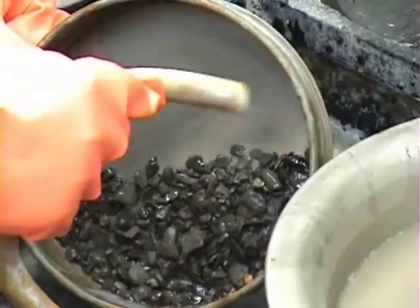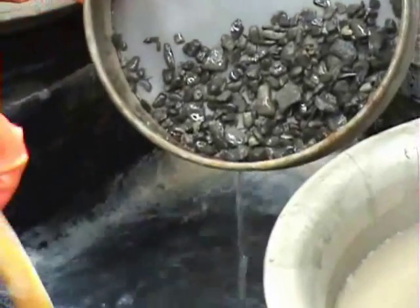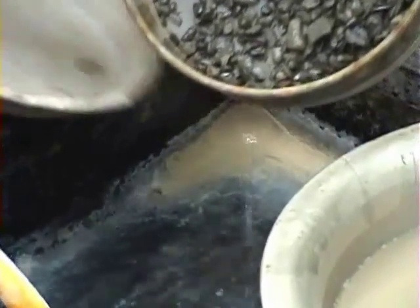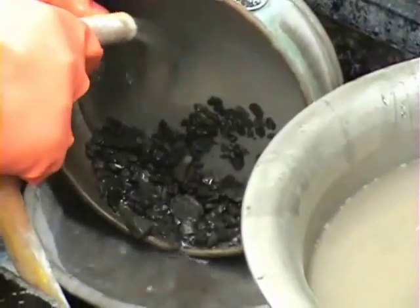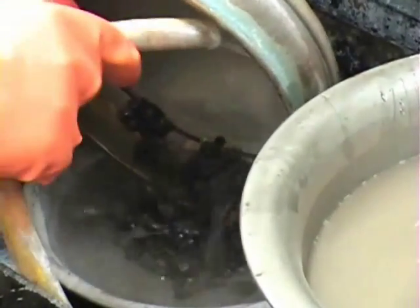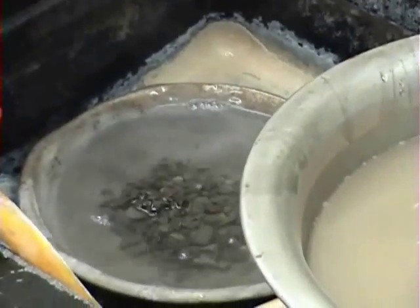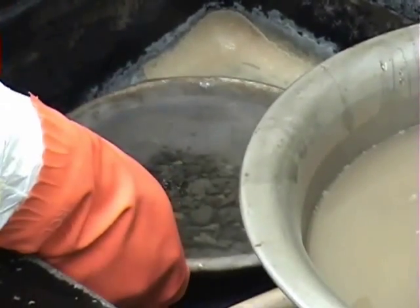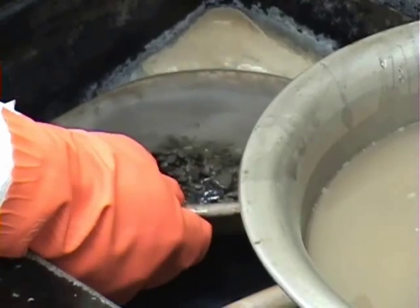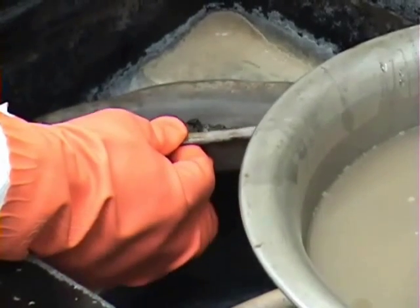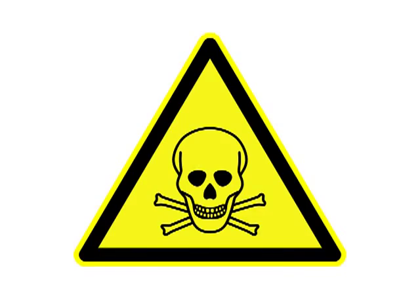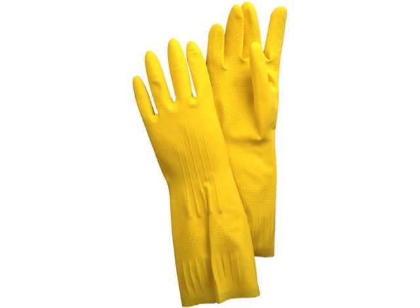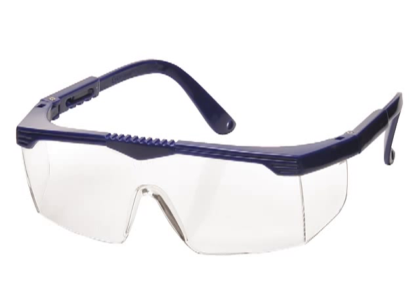Wash the particles on the number 30 sieve with hot water to remove all traces of zinc chloride. Decant excess water and oven dry to constant weight. Since zinc chloride is very dangerous, wear appropriate chemical resistant gloves, lab coat, and eye protection.